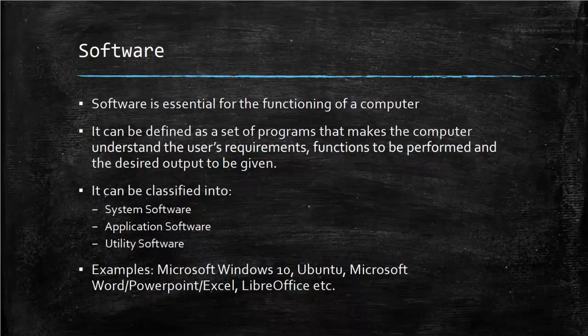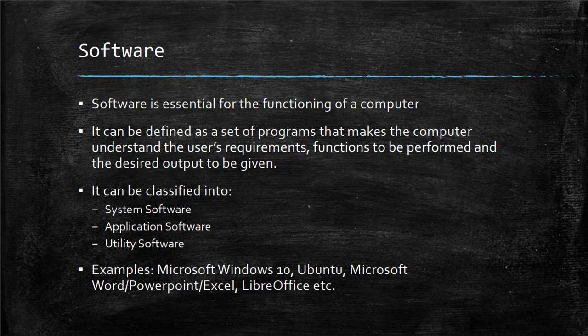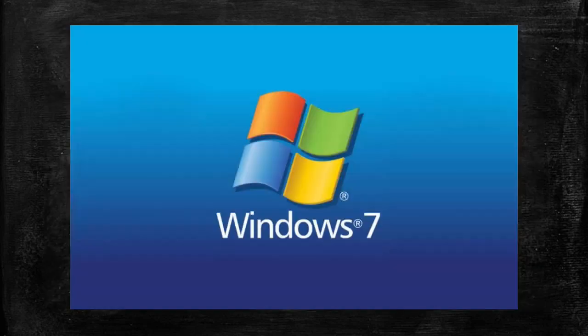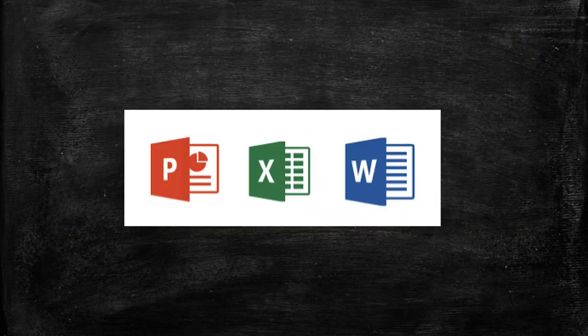Now let's briefly see what is meant by software. Software is essential for the functioning of a computer. It can be defined as a set of programs that make the computer understand the user's requirements, the functions to be performed, and the desired output. It can be classified into system software, application software, and utility software. Examples include Microsoft Windows 10, Windows 7, Ubuntu, Microsoft Word, PowerPoint, Excel, LibreOffice, and Adobe Photoshop. We will know more about software in the 2nd chapter.